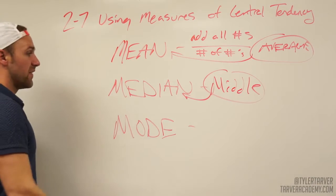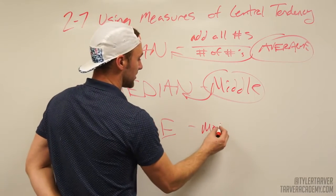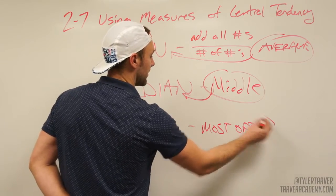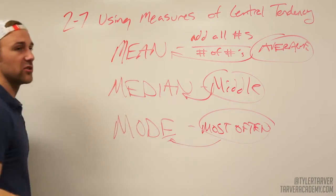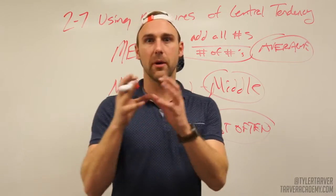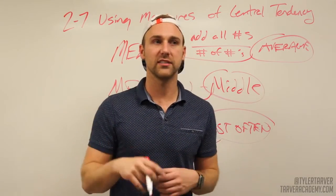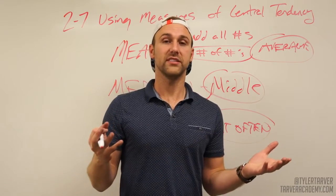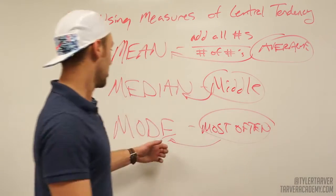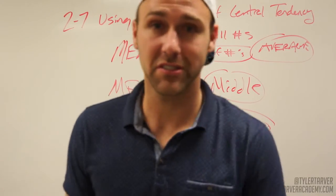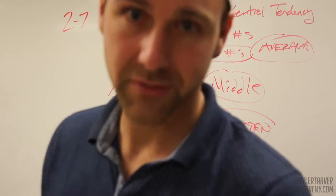And then mode - that's the most often. I wish I could have gotten that in one word, it would have been sweet. That's whatever occurs most often. So if you've got a set of numbers, it's whatever you see the most of. Like if you've got seven, seven, two, seven, five, four, three - there were like three sevens in there. So your mode would be seven because you see it the most. So those are your measures of central tendency. Congratulations, you just learned something.